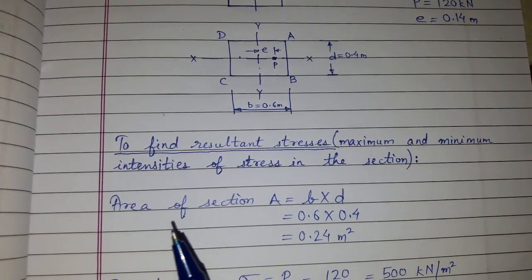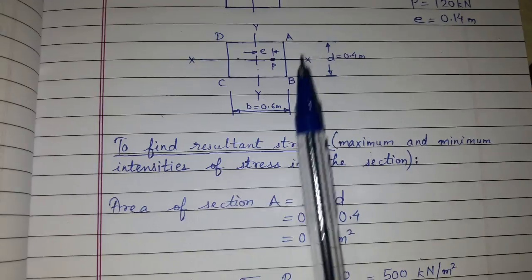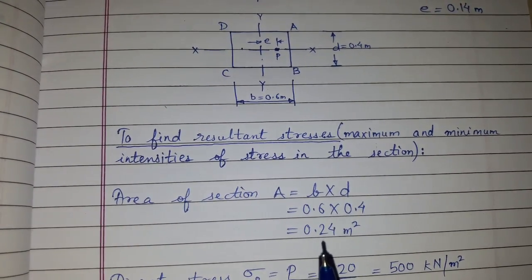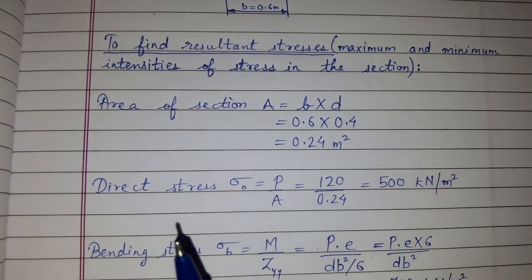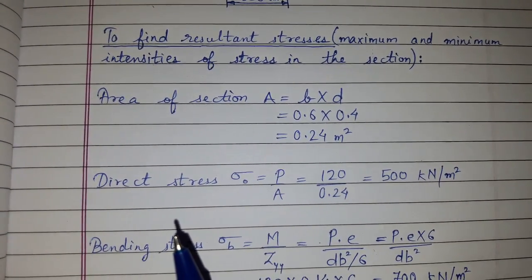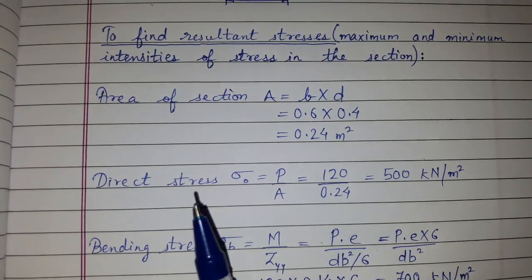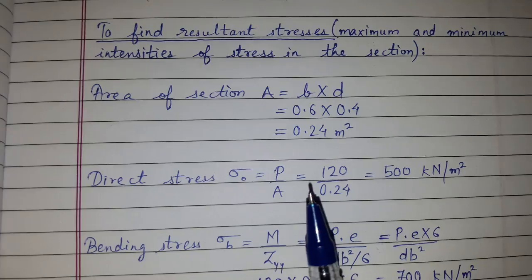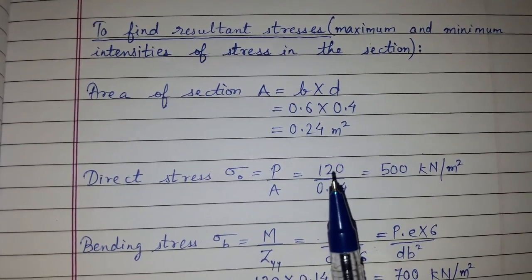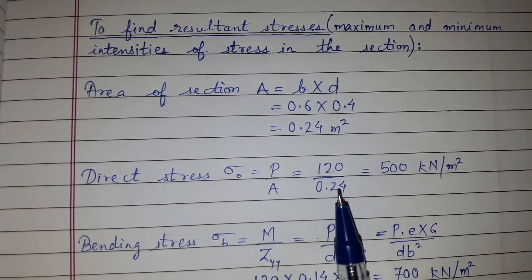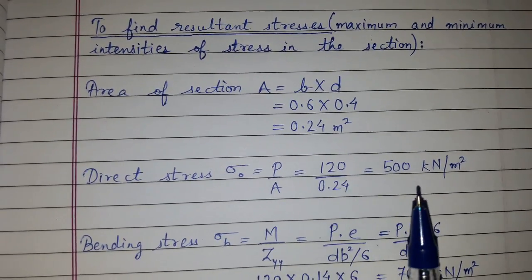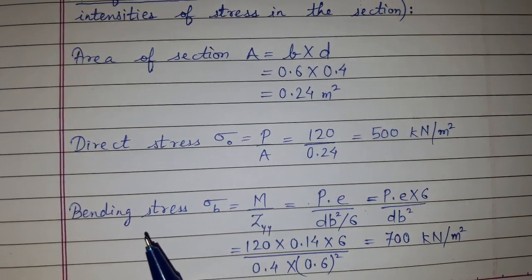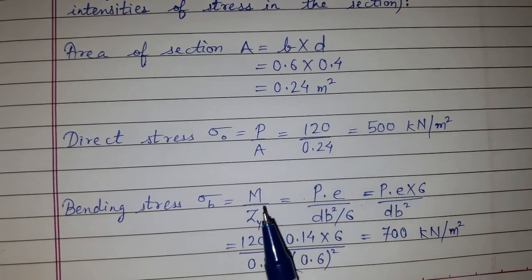First we will find the area. Area is equal to B into D, that is 0.6 into 0.4. We got 0.24 meter square. We need to find direct stress and bending stress so that we can calculate the resultant stresses. Direct stress sigma naught is equal to P upon A, where P equals 120 kN and A is 0.24 which we calculated. We got direct stress as 500 kN per meter square.